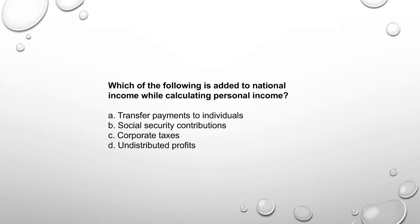Which one of the following is added to national income while calculating personal income? Transfer payments are added to national income to arrive at personal income.